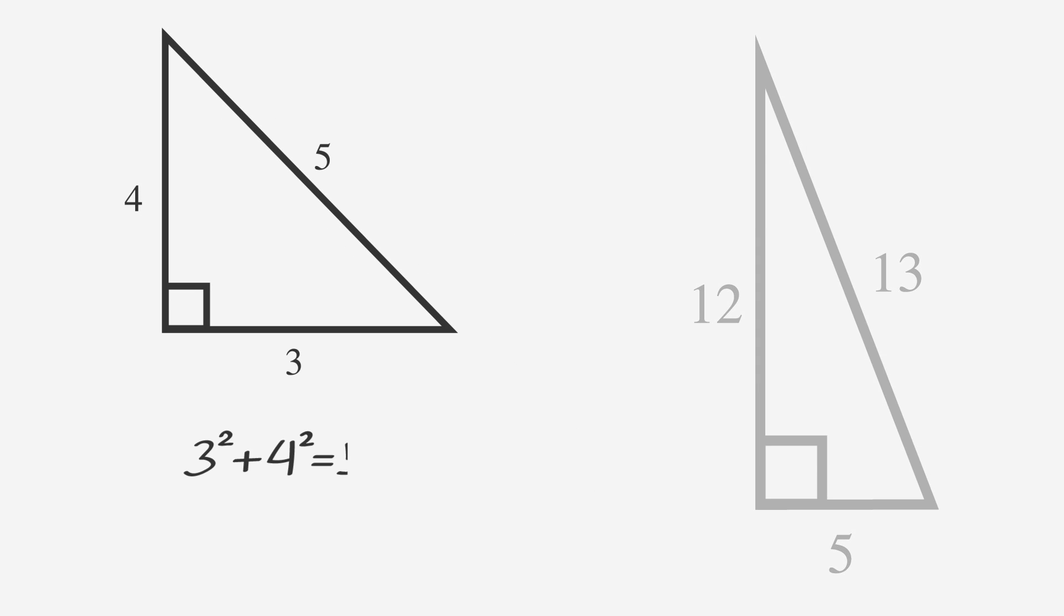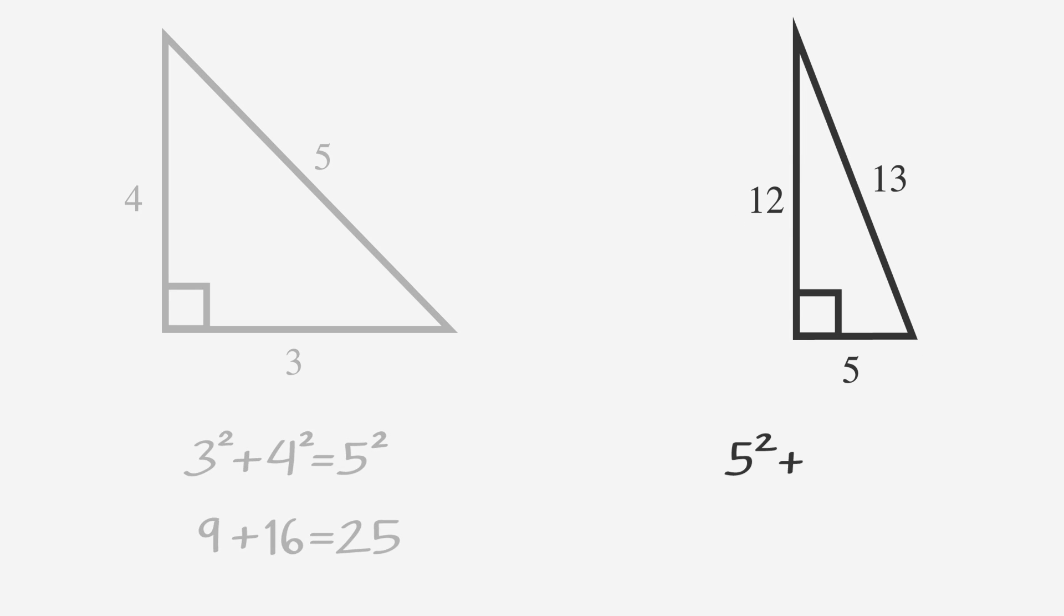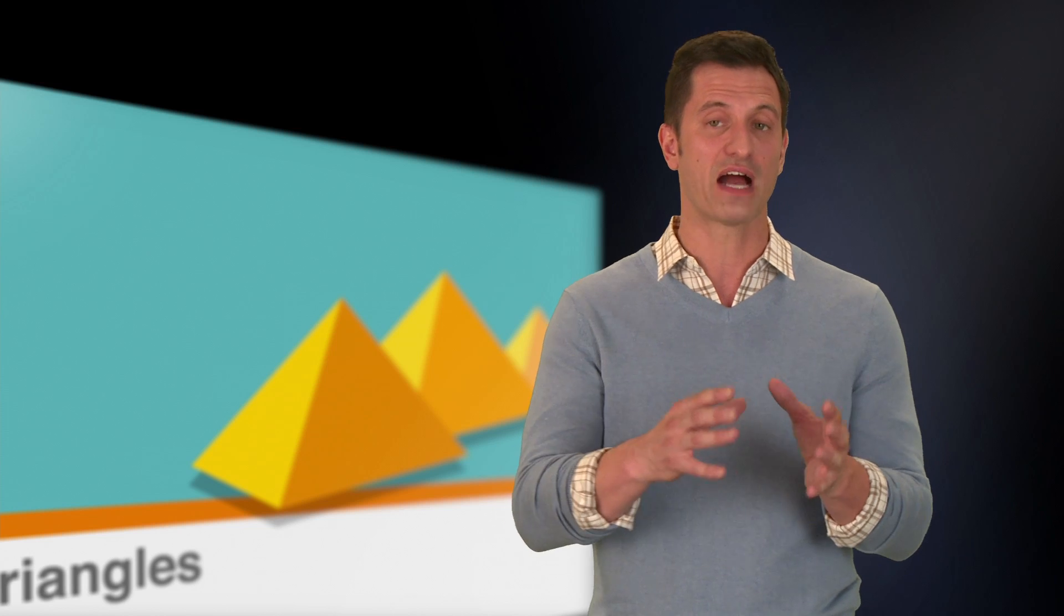3 squared plus 4 squared equals 5 squared, or 25, and 5 squared plus 12 squared equals 13 squared, or 169. Notice that the side lengths follow the Pythagorean theorem. If you don't recall the triangles, you can always use the Pythagorean theorem to solve for the missing side length. A lot of times, the ACT will hide 3-4-5 and 5-12-13 triangles in other shapes.